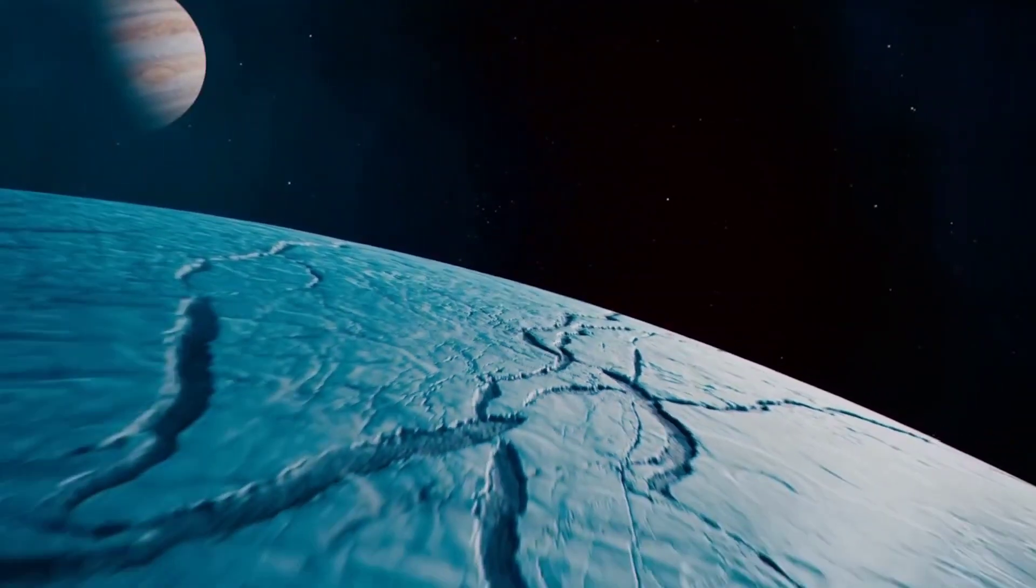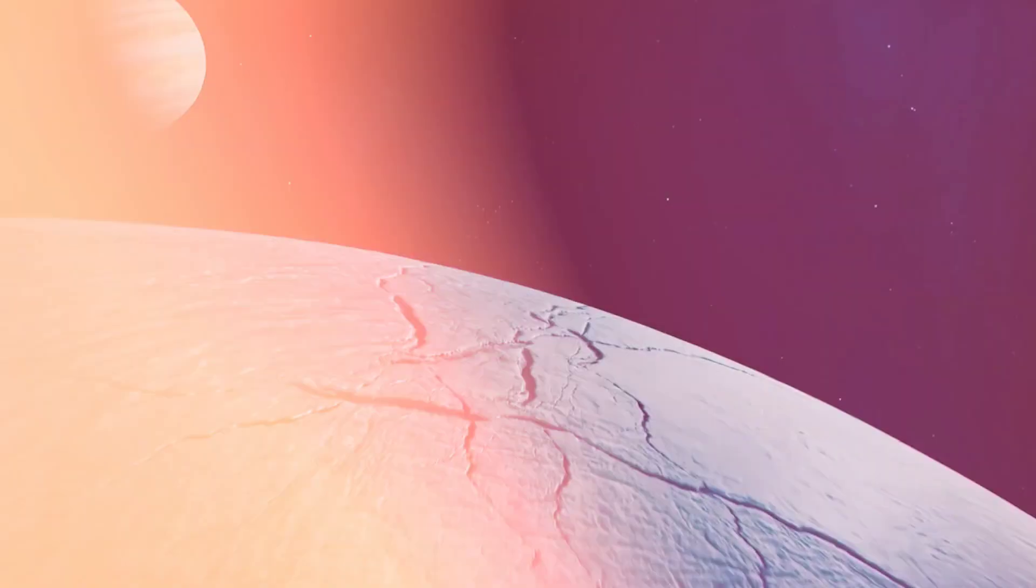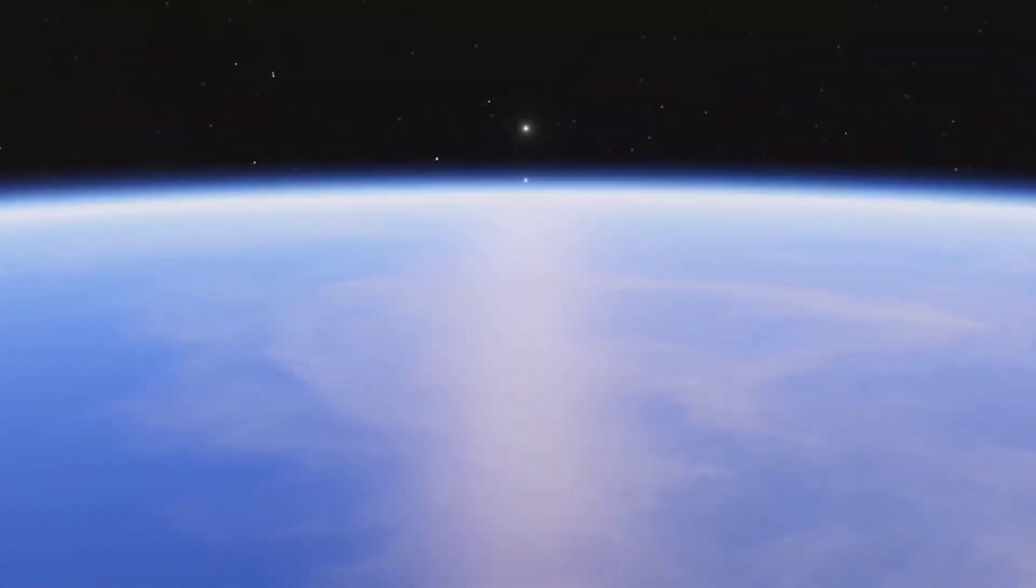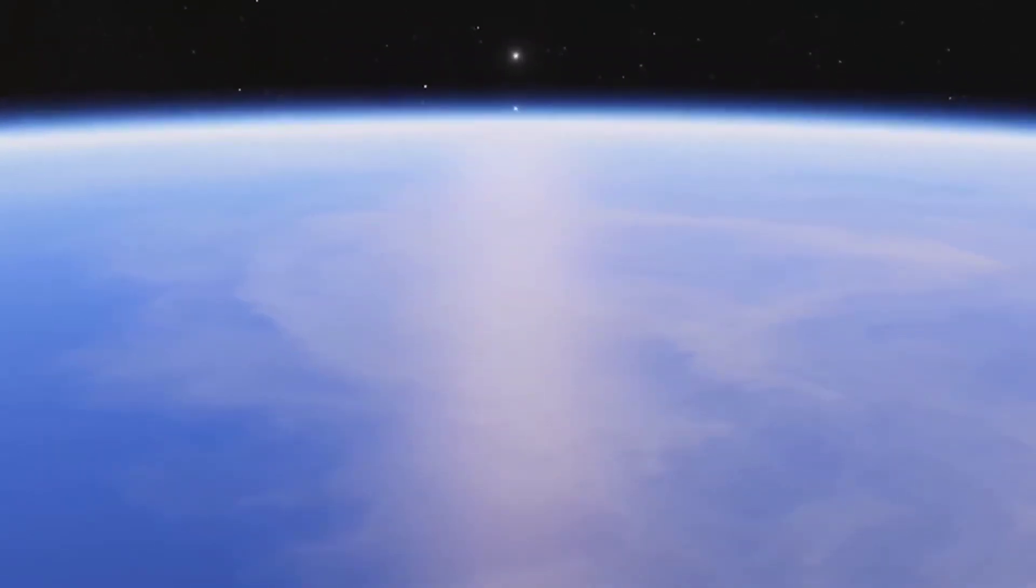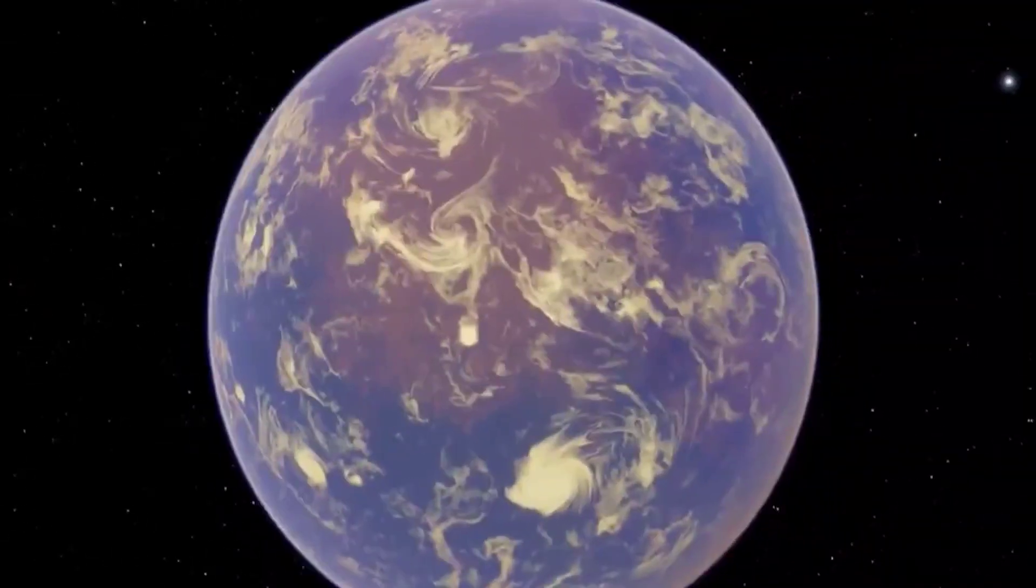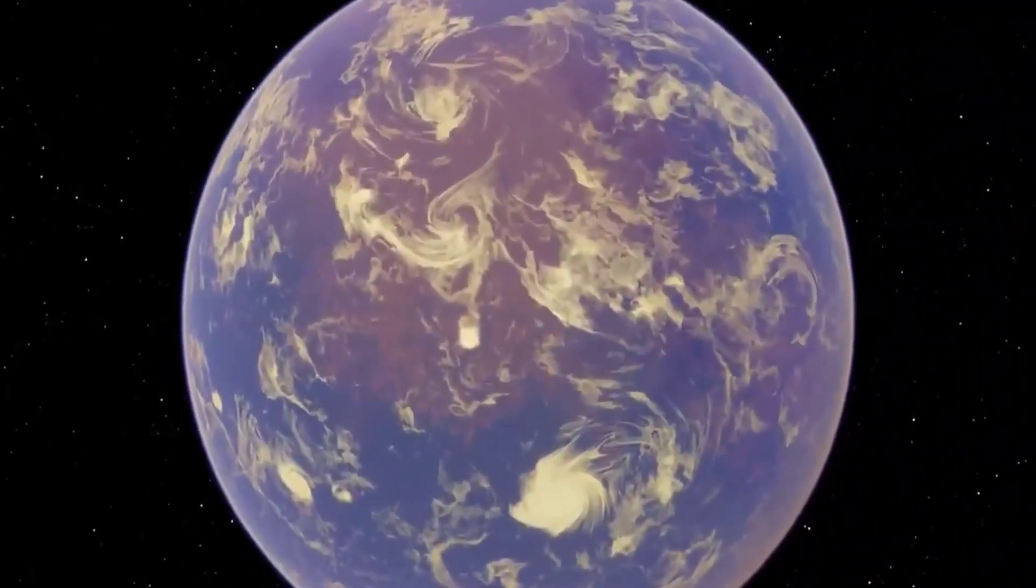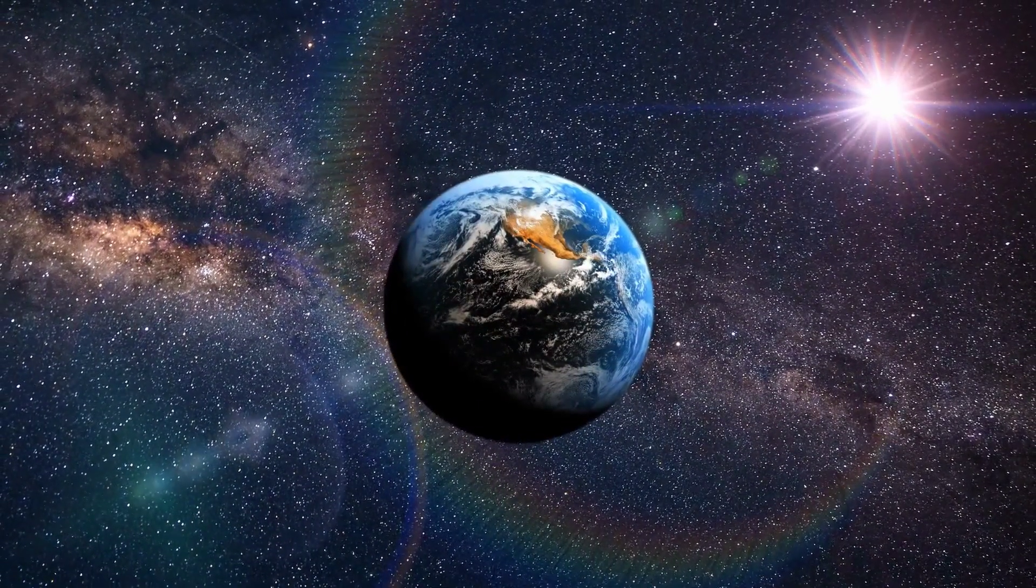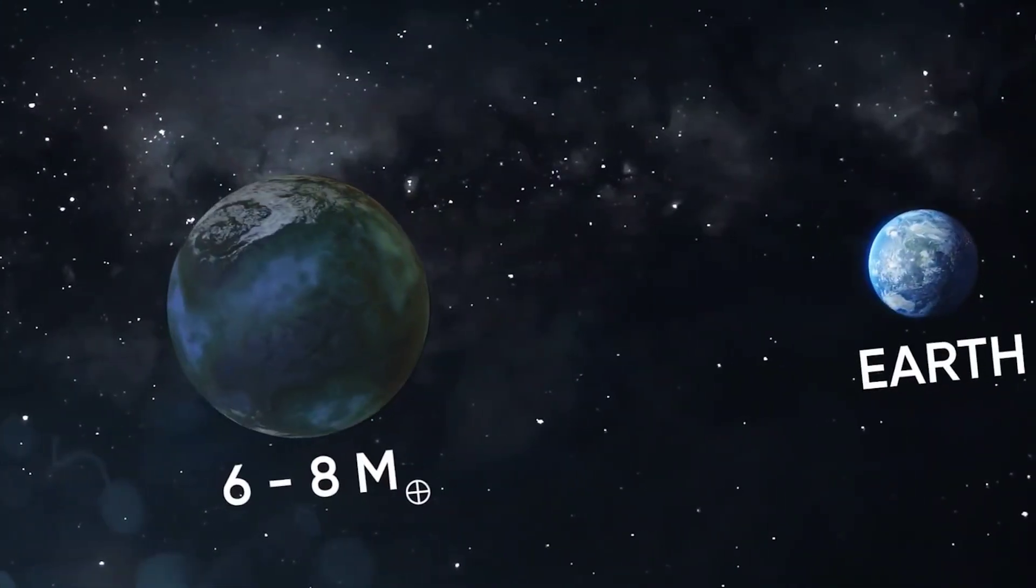Next on my list is the Gliese 1214b. Located about 40 light-years away from Earth, in the constellation Ophiuchus, Gliese 1214b is an interesting exoplanet that has been classified as a Super Earth by scientists. What Super Earth means is that the Gliese 1214b is six times larger than our planet, but significantly smaller than the gas giants in our solar system.